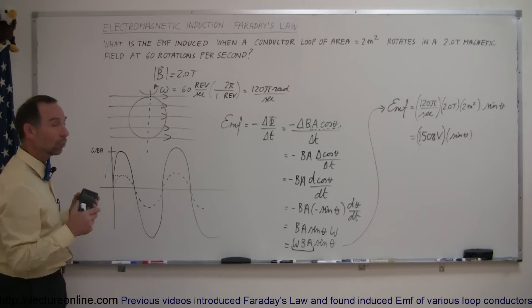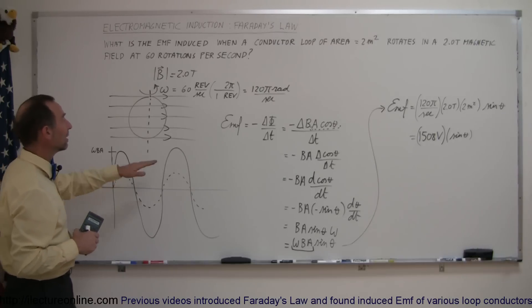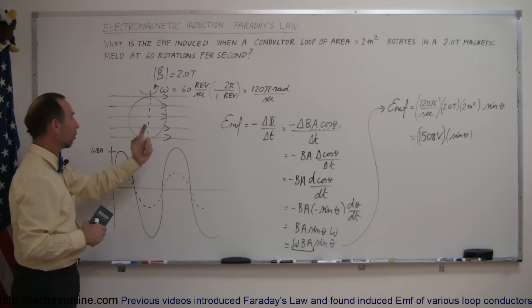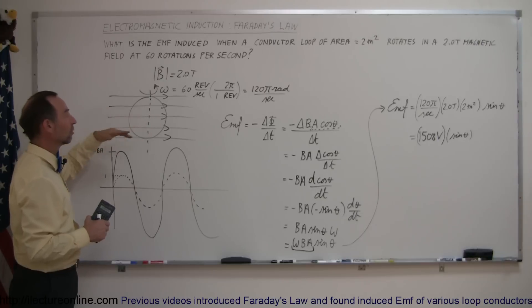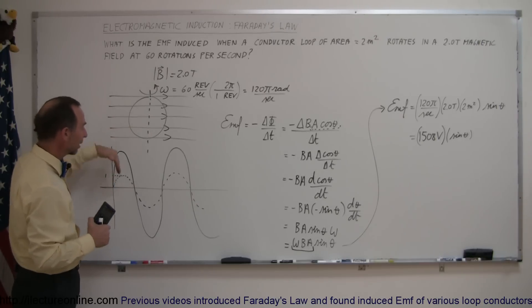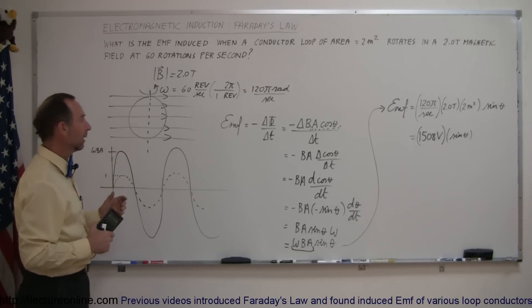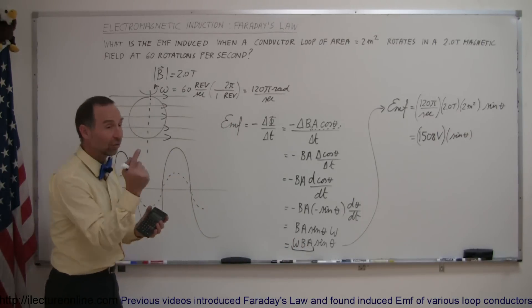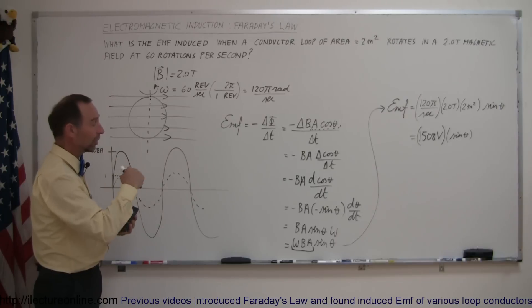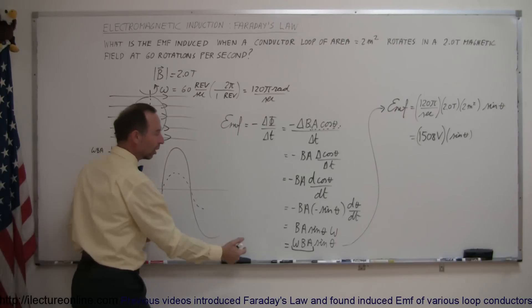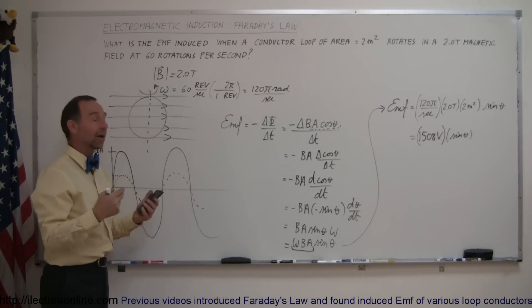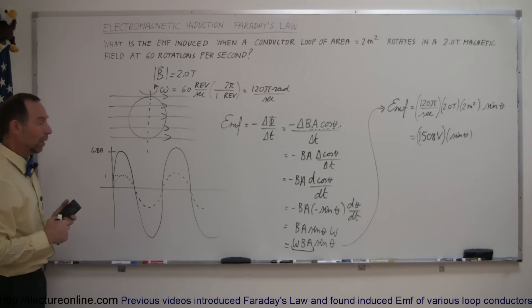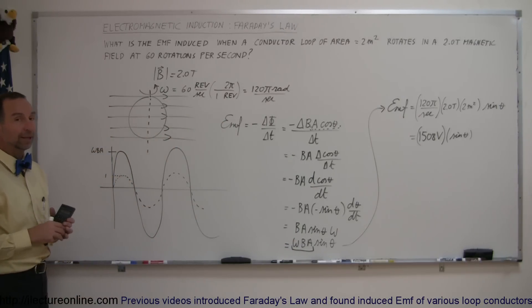To recap: the EMF induced is the changing flux over time. Because the loop is always rotating, the flux is constantly changing like a sine function, and the maximum voltage produced is omega·B·A. The faster the loop rotates, the higher the induced voltage; the stronger the magnetic field, the higher the induced voltage; and the larger the area of the loop, the more voltage is induced. And that's how you do a problem like this.